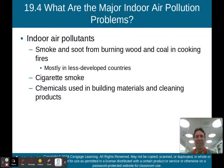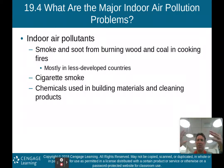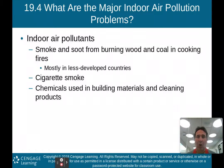Hello there, AP Environmental Science class. Welcome back to part two of my lecture on Chapter 19, Air Pollution and Ozone Depletion. We left off in part one talking about acid deposition, mainly acid rain, but also solid particles of highly acidic particles could also fall from the sky. Now we're going to move on in the chapter to 19.4, and this is: what are the major indoor air pollution problems? We talked about outdoor air pollution in part one. Now we're going to talk about indoor air pollution.